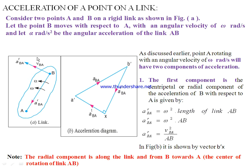Let us extend this discussion to a kinematic link. Let AB be a rigid link rotating about point A with angular velocity ω and angular acceleration α. At point B there will be two components of acceleration: the tangential component a_t(BA), which is perpendicular to link AB, and the radial or centripetal component a_r(BA), which is directed from B towards A along the link. Since B rotates about A, the radial component direction is always from B to A.